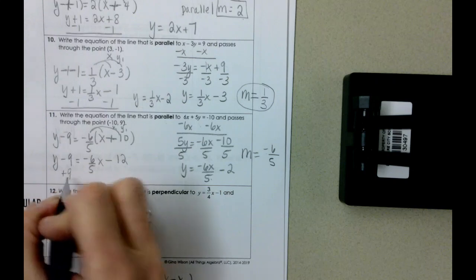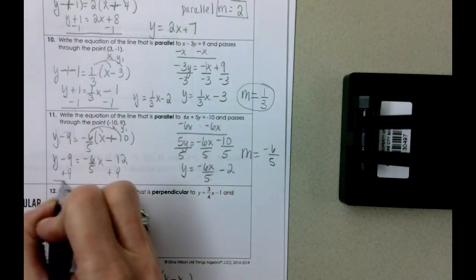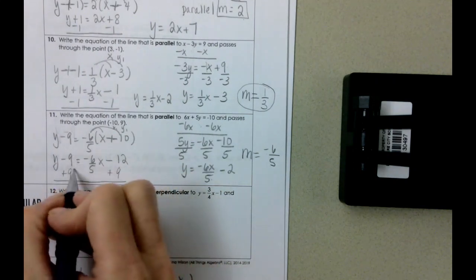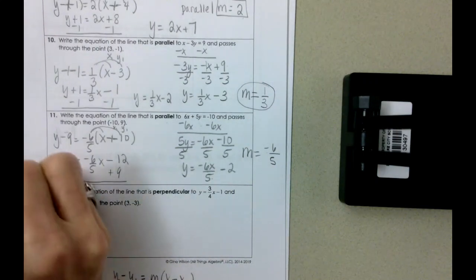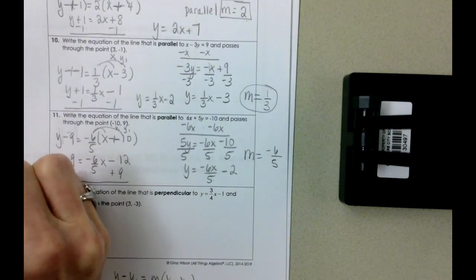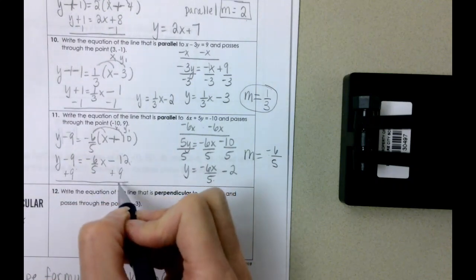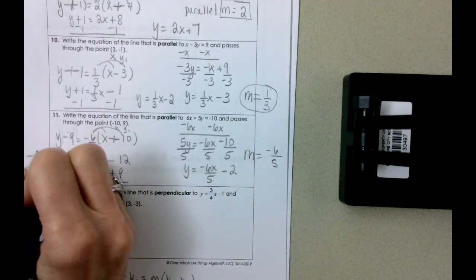And then I'm going to add 9 to finish here. And this is going to be y equals negative six fifths x, and then negative 12 plus 9 is negative 3.